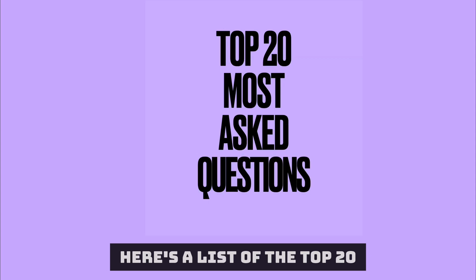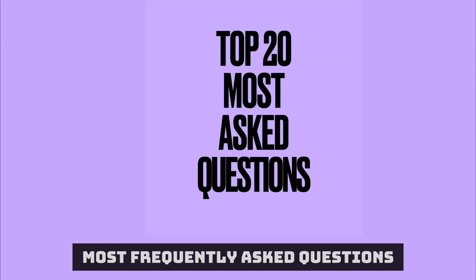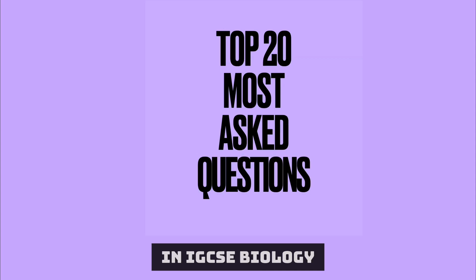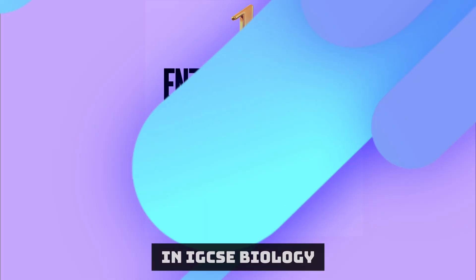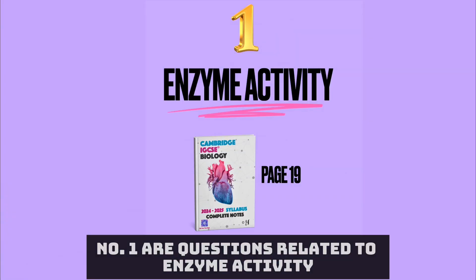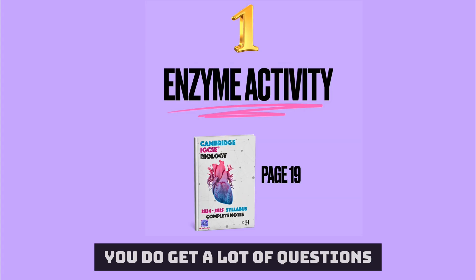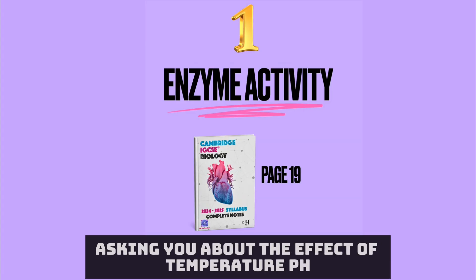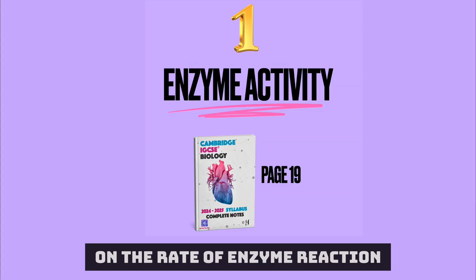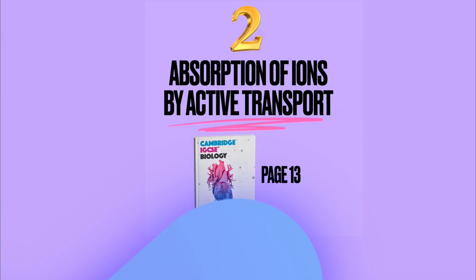Here's a list of the top 20 most frequently asked questions in IGCSE biology. Number one are questions related to enzyme activity. You do get a lot of questions asking you about the effect of temperature, pH, or the rate of enzyme reaction.